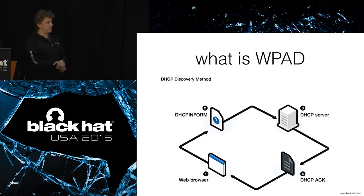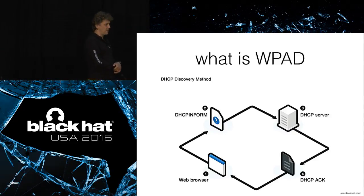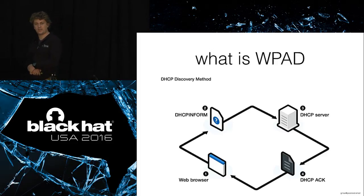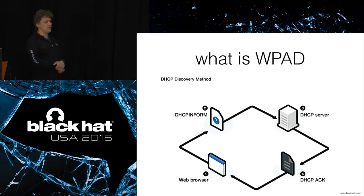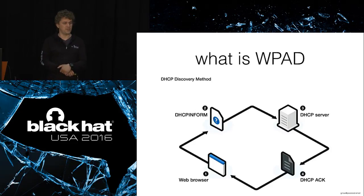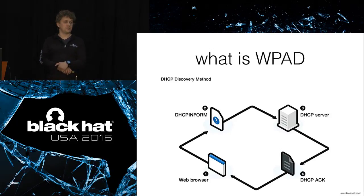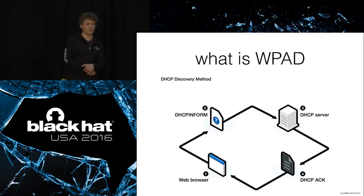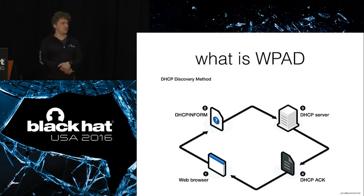The WPAD protocol provides network proxy settings in two different ways: using DHCP propagation and using DNS. With DHCP, when you receive an IP address, your operating system receives additional information about the location of the WPAD.dat file — actually a proxy.pac file consisting of JavaScript. This JavaScript gives directions on how to use the proxy, especially for certain system configurations, and for certain domain names you access.